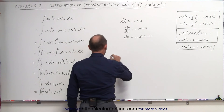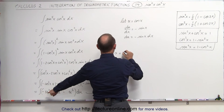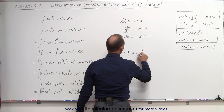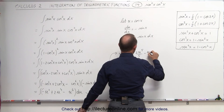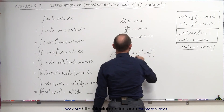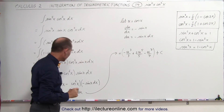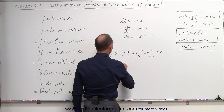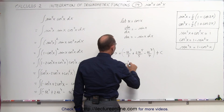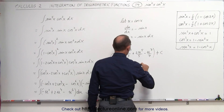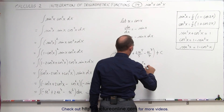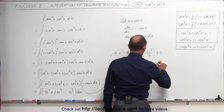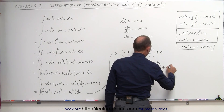Going ahead and integrating, this is equal to negative u cubed over 3 plus 2u to the fifth over 5, minus u to the seventh over 7, plus a constant of integration. Now we plug back in what u equals — since u equals the cosine of x, this becomes negative cosine cubed of x divided by 3, plus 2 times cosine to the fifth of x over 5, minus cosine to the seventh of x divided by 7, plus a constant of integration.